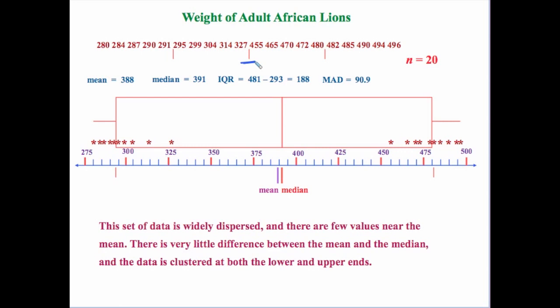Then for the medians of the upper and lower halves of the data we get 481 and 293. That difference is 188, so our interquartile range is 188. And when we figure out the average distances of all our data points from 388, the mean absolute deviation is 90.9.